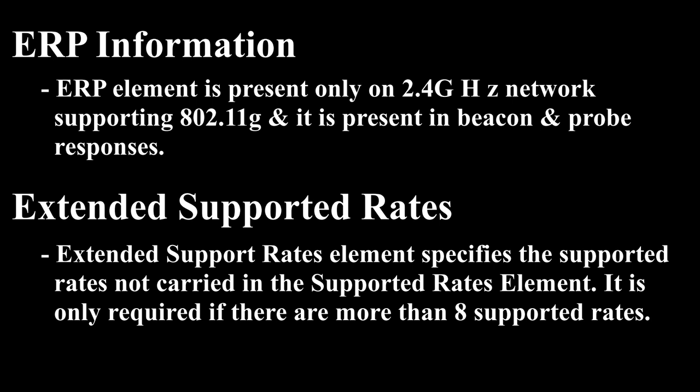ERP element is present only on 2.4 GHz networks supporting 802.11g, and it is present in beacons and probe responses. The non-ERP Present bit is set to 1 in the following conditions: a non-ERP station (legacy 802.11 or 802.11b) associates to the cell, a neighboring cell is detected allowing only non-ERP data rates, or any management frame except a probe request is received from a neighboring cell supporting only non-ERP data rates. Extended Supported Rates specifies the supported rates not carried in the Supported Rates element; it is only required if there are more than eight supported rates.